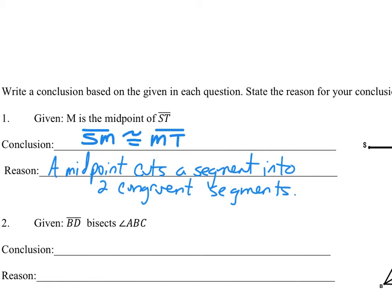A midpoint cuts a segment into two congruent segments. Refer back to the table: it says the point that divides a segment into two congruent segments. When we create a formal proof, you're not going to have to write out the entire definition - we rely on the fact that some things are just known by definition. So if this were part of a proof, we'd say SM and MT are congruent, and the reason would be: definition of midpoint.